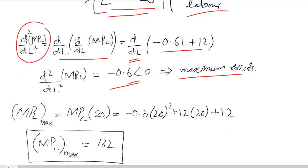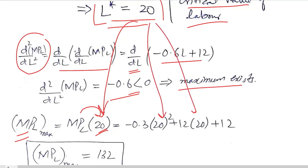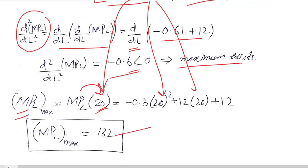We find the maximum value of the marginal product of labor by substituting the critical value of L=20 into the marginal product of labor function. The marginal product of labor at maximum is 132.